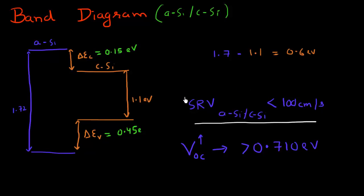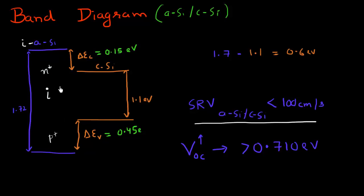There is a caveat associated with this. The caveat is that these low surface recombination velocities, or this good surface passivation, is only realized when the amorphous silicon layer is intrinsic, that is, if the amorphous silicon layer is undoped. If you try to dope the amorphous silicon layer to either N or P-type to make junctions, then you don't realize these good surface recombination velocities.